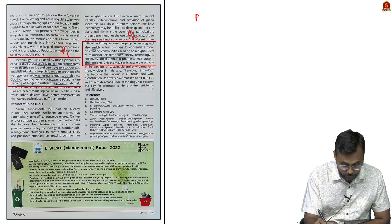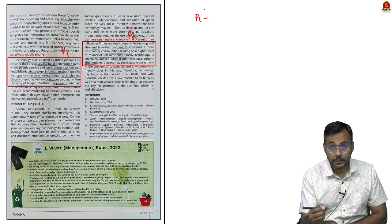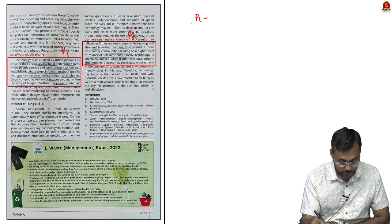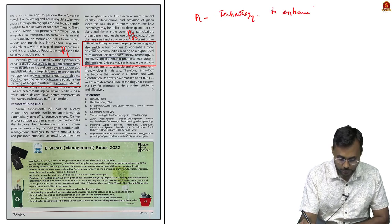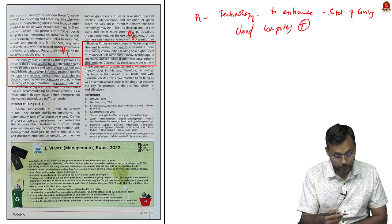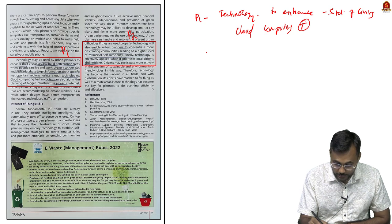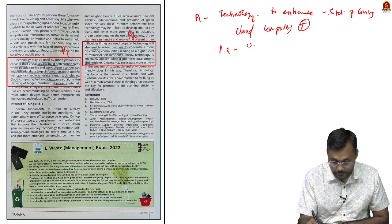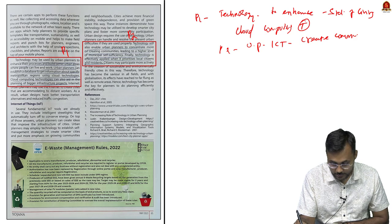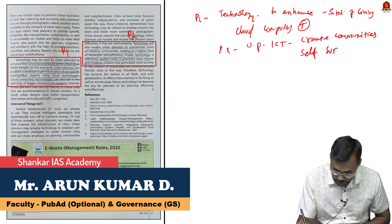Paragraphs 1 and 2 say that through urban planning, urban planners are able to use technology to enhance people's standard of living. Cloud computing technologies can also be used alongside GIS. Through ICT, planners can create databases and build communities — not just cities or infrastructure, but mostly self-sufficient communities.